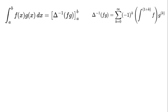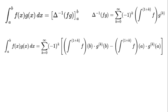So the definite integral becomes our main formula: the integral from a to b of f(x) times g(x) dx equals the sum from k equals 0 to infinity of negative 1 to the power of k times — [antiderivative of f to the power of 1 plus k evaluated at b times g to the power of k evaluated at b] minus [antiderivative of f to the power of 1 plus k evaluated at a times g to the power of k evaluated at a].